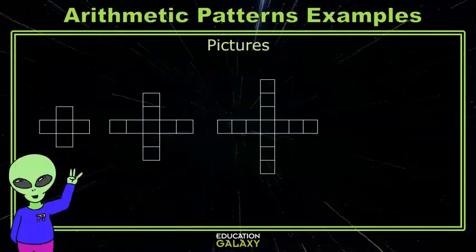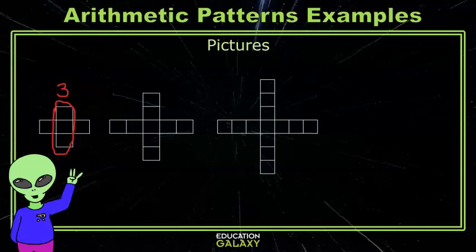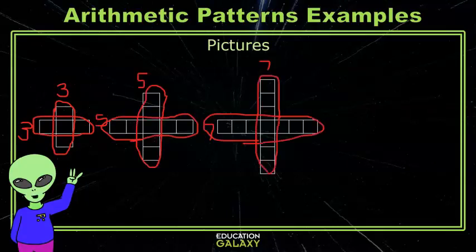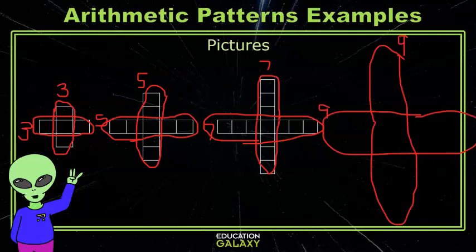We can also recognize patterns in pictures. To figure out the pattern, let's identify how big each shape is. The first one is 3 boxes tall and 3 boxes wide. The second one is 5 tall and 5 wide. Then 7. So if I have 3, 5, 7, the pattern is adding 2. So that means the next value in the pattern would be 7 plus 2, which is 9. So it should be 9 tall and 9 wide. So our next shape would look like this.